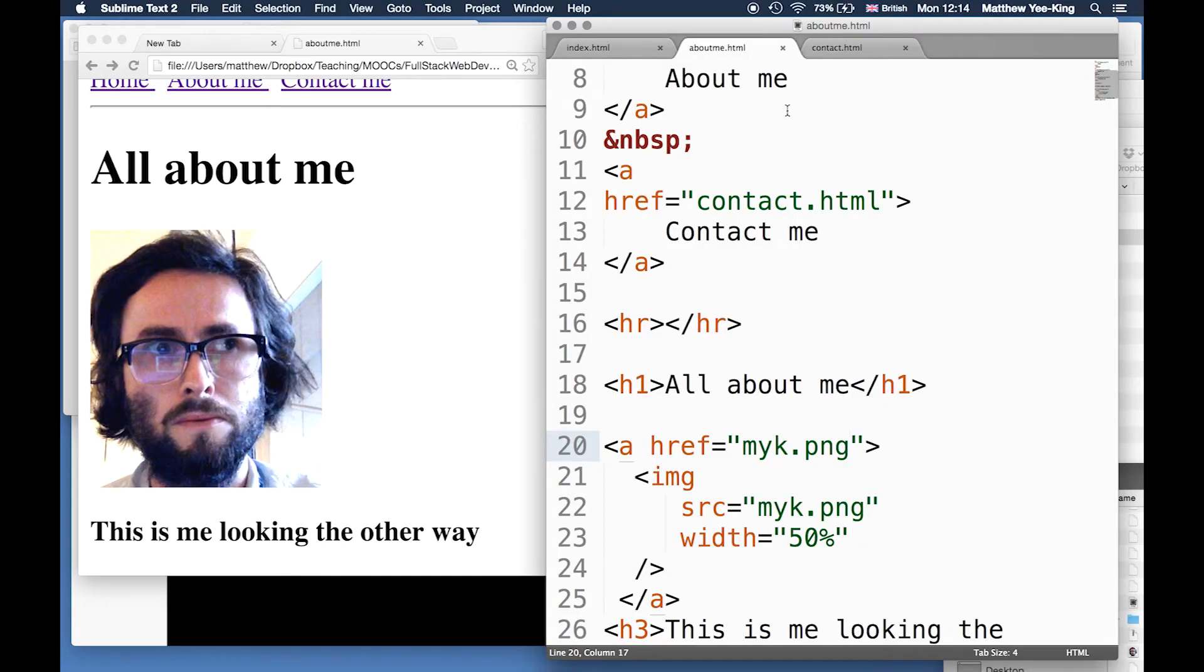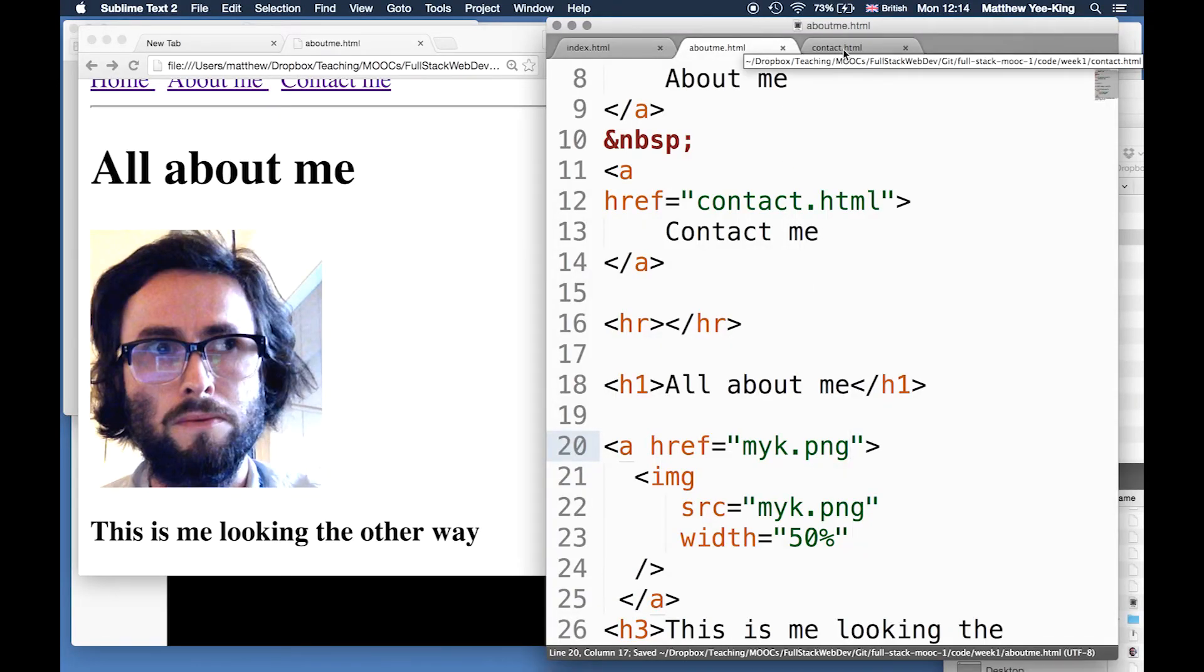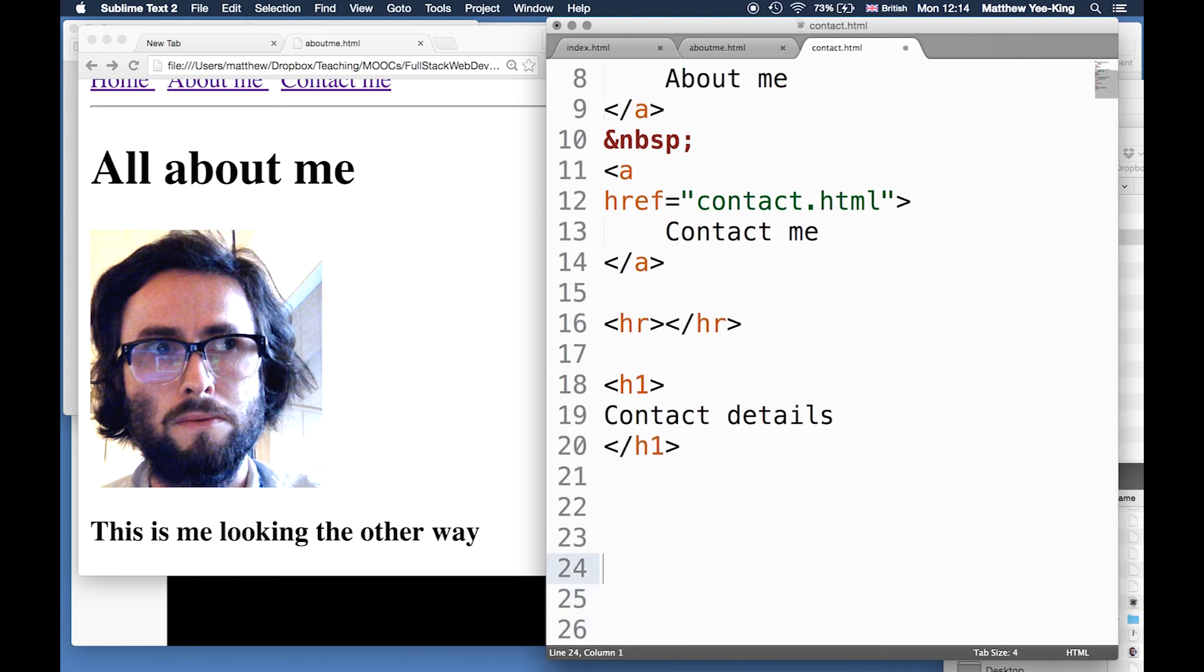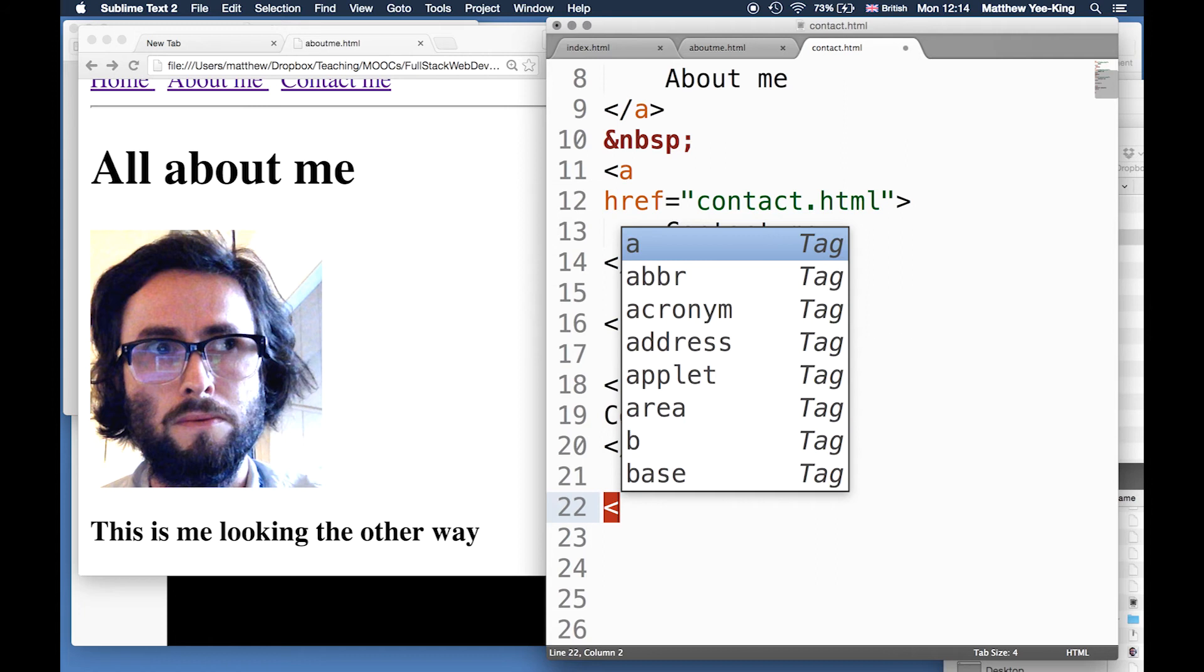So I've used the img tag. Now another tag I wanted to show you is the tags we can use for listing. Quite often on web pages we want to create lists of things - you've certainly come across the best five Coursera web programming MOOCs or the best five pictures of funny animals. So how do we create these kinds of lists? I'm going to go to the contact page to use that - seems like a sensible place where we might have a list of things.